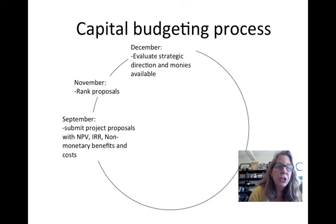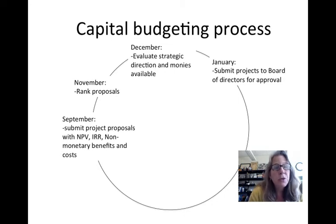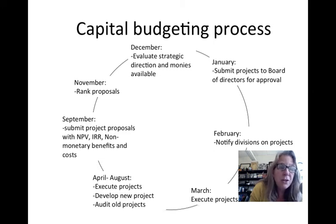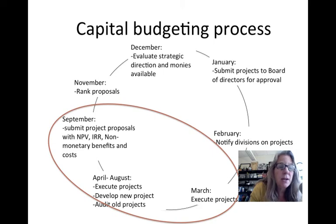Each ranked proposal is evaluated on strategic issues and money available — which is best for our strategy, and how many can we fund? In January, the corporate entity presents to the board of directors and asks for approval. Once approved, projects are notified to the divisions, which begin executing them. In the background, from April through August, you're executing current projects, developing new proposals to submit in September, and auditing old projects. So the function is annual but also ongoing.